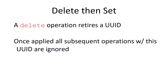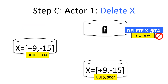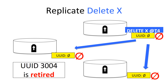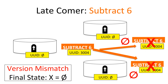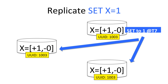Next example is delete. A delete retires a UUID — it makes a tombstone, which is a database term for retiring something. Once this tombstone exists, any operations from a previous state are ignored. The blue guy deletes X, which creates a tombstone and sets the UUID to empty set. We replicate this and 3004 is gone. When the latecomer subtract 6 comes in with 3004, it's a version mismatch with the tombstone empty-set UUID. Then when we reset X equal to 1, UUID 1003 at time 7 wins last writer wins, and everyone converges to X equals 1.